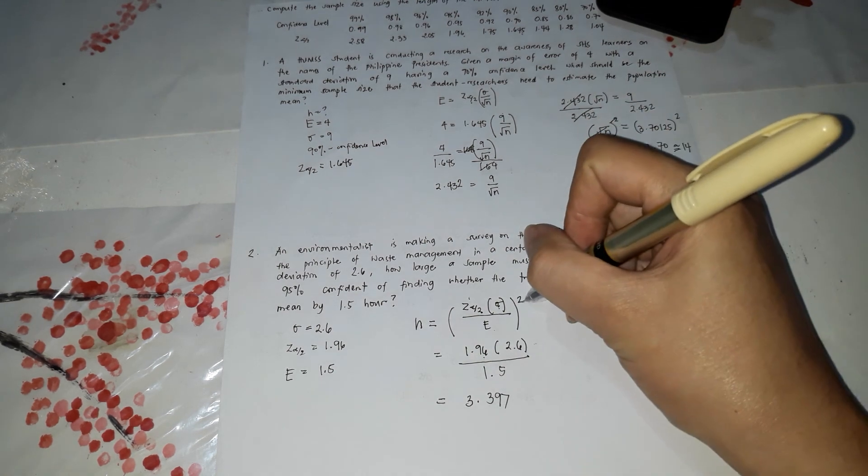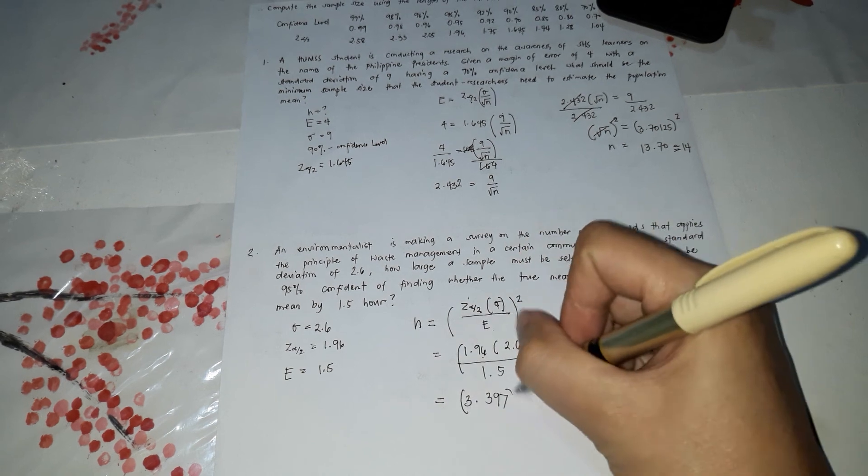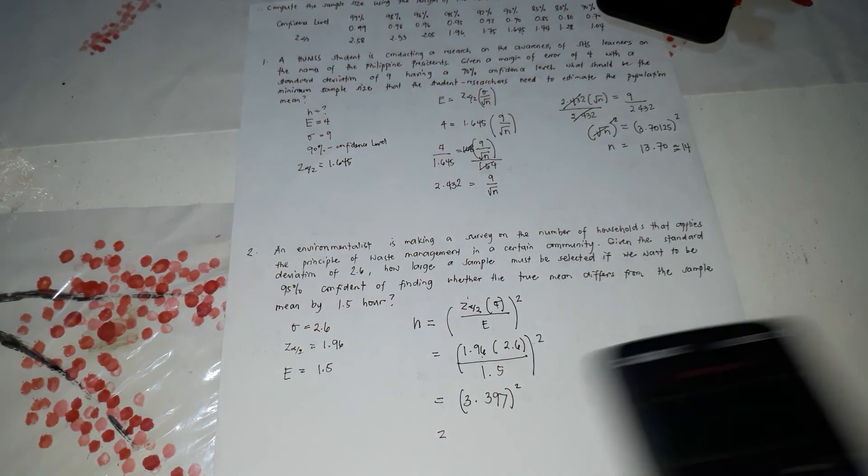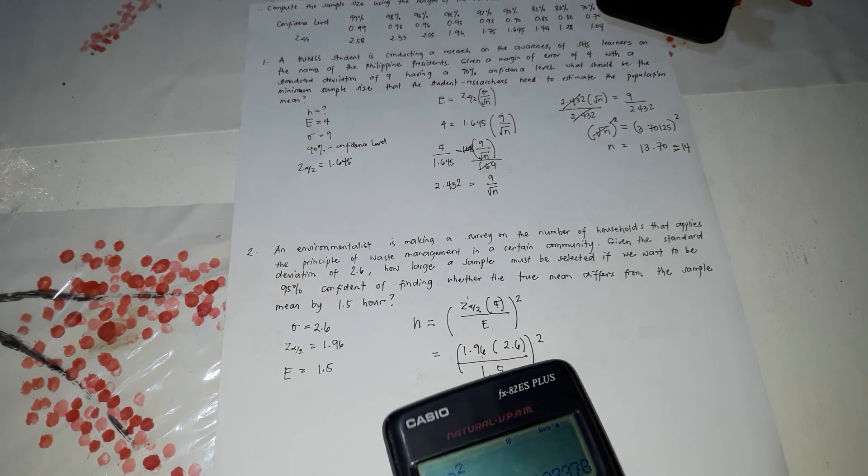The formula should be squared. Why squared? Because there's a squared term. So we need to square it. I did not copy it. So squared. The answer should be squared. That's 11.54.